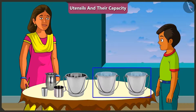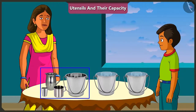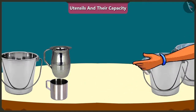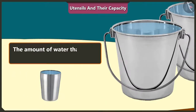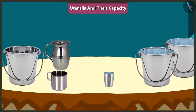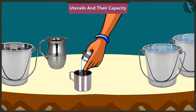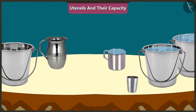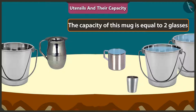Mummy, what are these two buckets of water for? Mishtu, we will use this water to find the capacity of all these vessels. First of all, I will fill this glass completely with water. The amount of water in this glass is its capacity. Now, with the help of this glass, I will fill this mug — one glass and one more, that is two glasses. We can fill this mug with two glasses of water. This shows that the capacity of this mug is equal to two glasses of water.